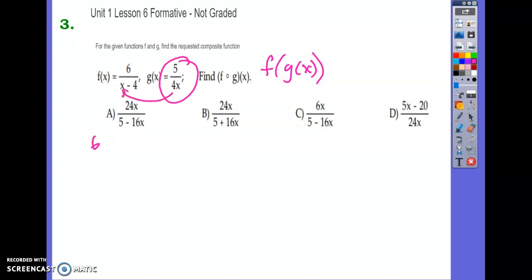So that's going to be six over our x is five over four x minus four. Now, this is where the tricky part comes in. And this is just a little manipulation. These are two fractions in the denominator that we have to add together that have different denominators. So we just are going to make them the same.